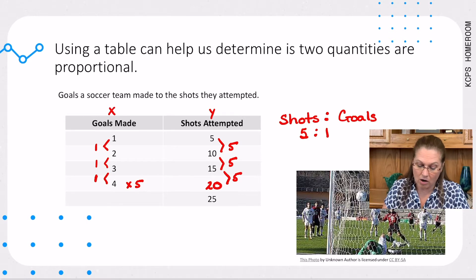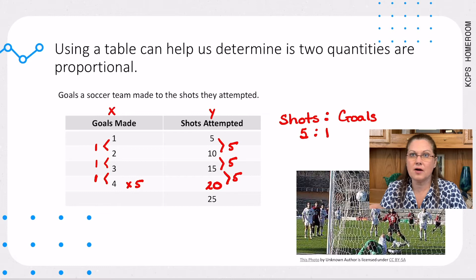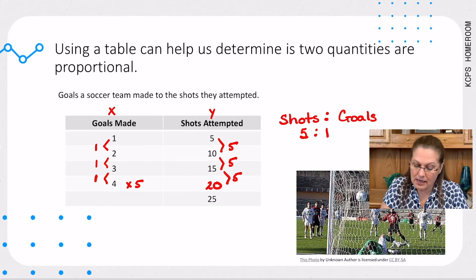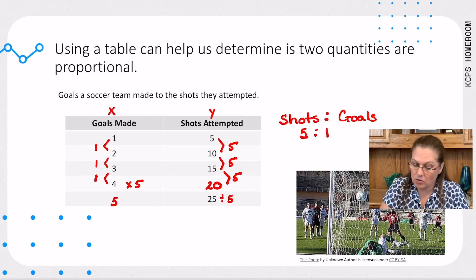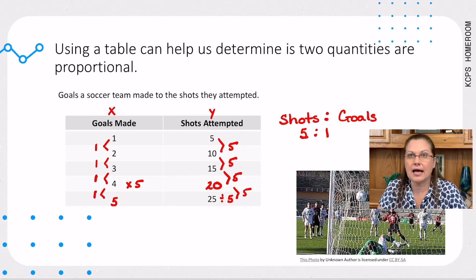You'll notice that our fifth row is left blank. We have our shots attempted, but we don't have our goals made. As in our fourth example, we multiply times 5 to fill in our y value or our shots. We're going to reverse the process. So, instead of multiplying times 5, we're going to divide by 5. So, if I made 25 shots, that means I'm going to make 5 goals. I can go ahead and check by continuing to see my rate of change throughout my table. The change between 20 and 25 is 5. The change between 4 and 5 is 1. So, I know my missing information that I filled in is accurate because I have my constant ratio.